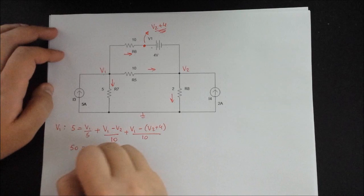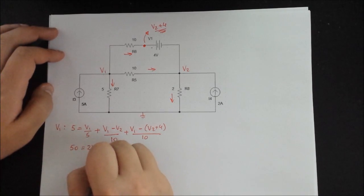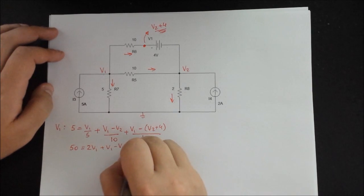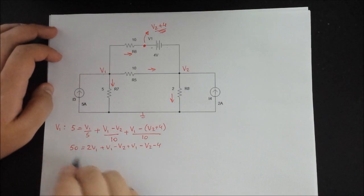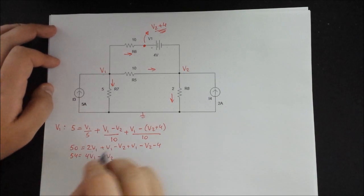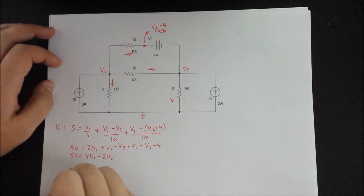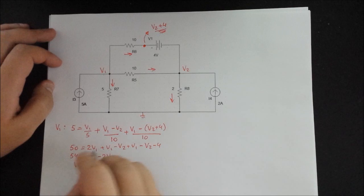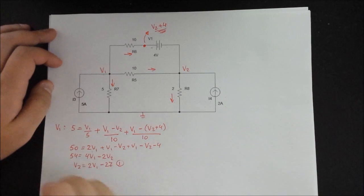We can simplify this equation by multiplying by 10. So it's 50 is equal to 2V1 plus V1 minus V2 minus 4. And let's go ahead and actually do the numbers. So that's 54 and it's equal to 4V1 minus 2V2. And we can solve directly for V2. So V2 is equal to 2V1 minus 27. So that is our first equation.